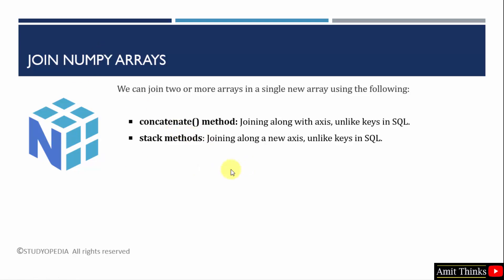Within stack, we have five more methods: stack, hstack, vstack, dstack, and column_stack. We will see them all one by one, but first we will begin with joining using the concatenate method. Let's start.